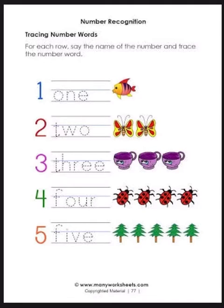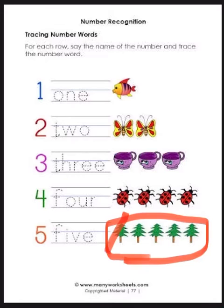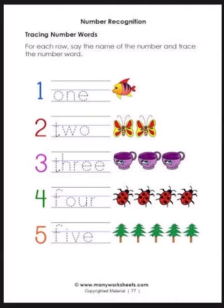Now, how many Christmas trees are there? There are five Christmas trees. One, two, three, four, five. So say the spelling of five: F-I-V-E, five. Say it again: F-I-V-E, five.